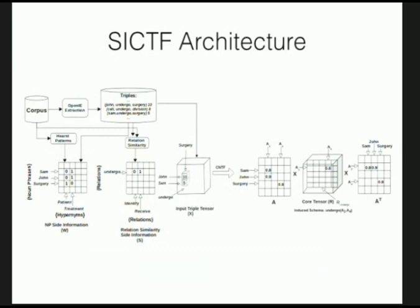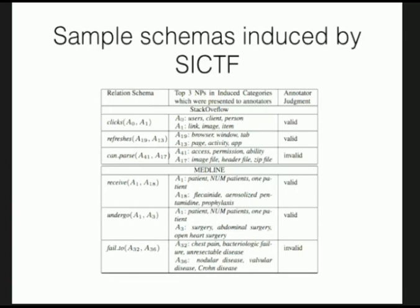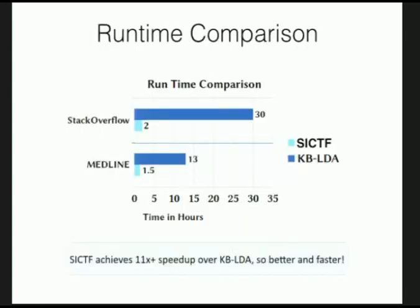Here is the overall architecture of SIGF: starting from the corpus, we extract triples, build the tensor and side-information matrices, and jointly factorize them into latent components. The objective has three terms corresponding to the tensor reconstruction and the various side information matrices. SIGF not only performs better but also runs faster than the baseline.